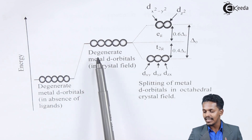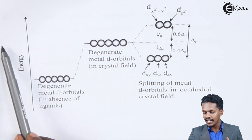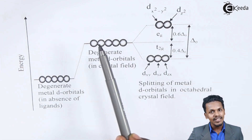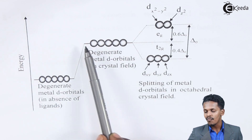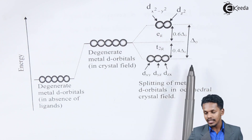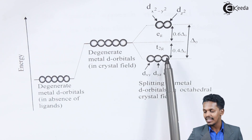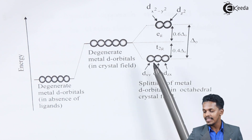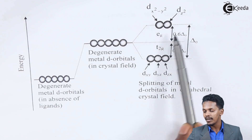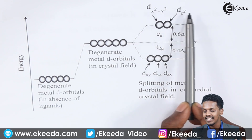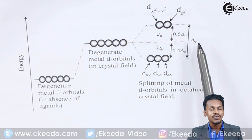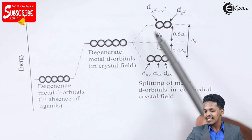In crystal field theory, the degenerate metal d orbitals all have the same energy level, but when a ligand approaches the central metal ion, they split into two energy levels. The five d orbitals split into the lower t2g level — containing dxy, dyz, and dzx — and the upper eg level, containing dx²-y² and dz². This splitting in an octahedral crystal field gives a difference denoted as Δ₀ (delta naught), which equals 10Dq.